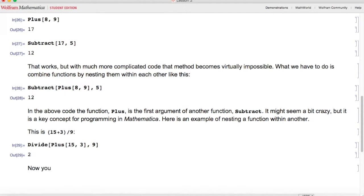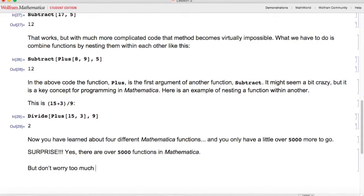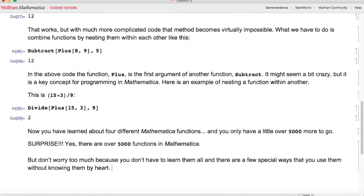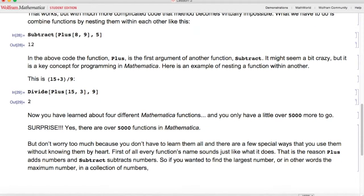Now you've learned about four different Mathematica functions, and you only have a little over 5,000 more to go. Surprise! Yes, there are over 5,000 functions in Mathematica. But don't worry too much because you don't have to learn them all and there are a few special ways that you use them without knowing them by heart. First of all, every function's name sounds just like what it does. That is the reason Plus adds numbers and Subtract subtracts numbers. So if you wanted to find the largest number, or in other words the maximum number in a collection of numbers, you would use the function that sounds just like what it does: Max.